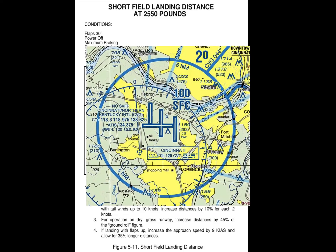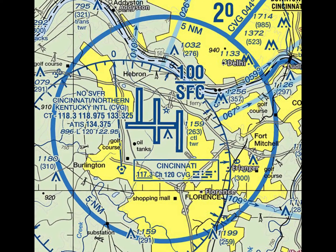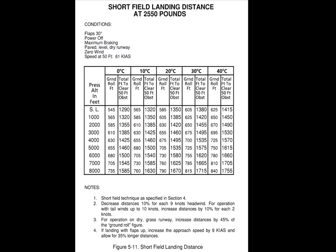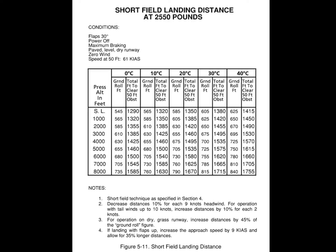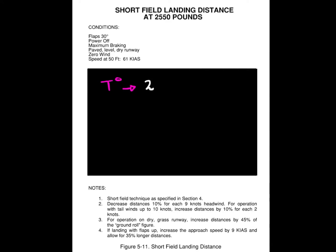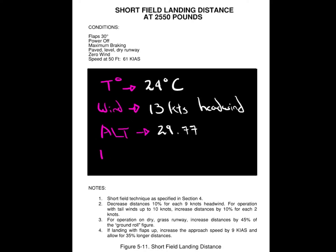Let's say we're landing at the Cincinnati International Airport in Northern Kentucky, where the field elevation is almost 900 feet. The first thing we will need to do is consider the conditions presented on our chart, which once again are based on the short field technique. The 172S model only has a 2550 pound chart, so we will stick to that one. The weather conditions for our landing are the following: we will have 24 degrees outside and a headwind component of 13 knots. Our altimeter setting is going to be 29.77, which will make our pressure altitude a value of 1046 feet.